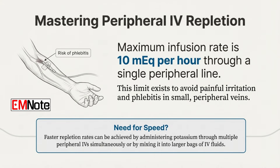But what if we need to go faster than 10 per hour but don't have a central line yet? You can simply run it through multiple IV sites — two lines would get you 20 an hour. So double the lines, double the rate. Or you can mix the potassium into a larger bag of IV fluids to dilute the concentration, which helps reduce the irritation.